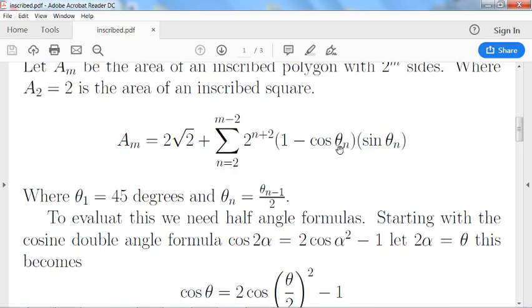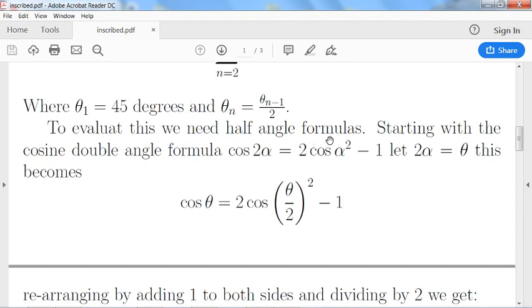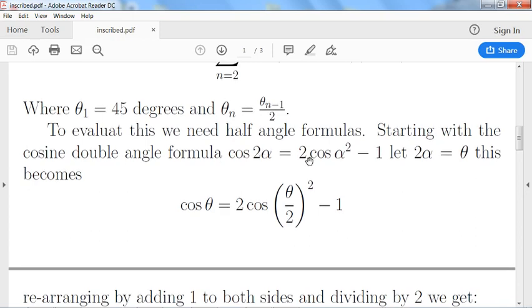So we're going to work out a half angle formula starting with a cosine double angle formula. This is a well known double angle formula for cosine. And then we just substitute 2α in, we let 2α equals θ, so then 2α will turn into θ here and α will be θ over 2 and we'll get this formula.